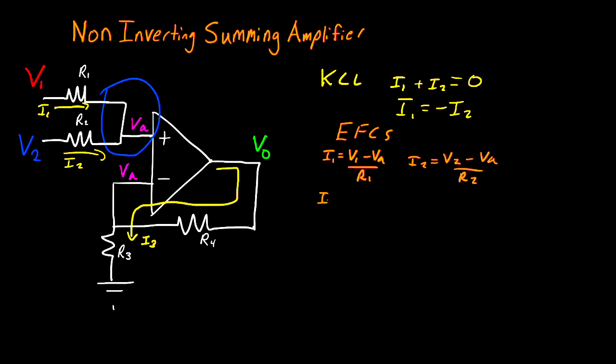Now for R3, we have I3 is equal to VA minus zero divided by R3. Lastly, we have to write the equation for R4, and that's going to be I3 is equal to V0 minus VA divided by R4. At this point, we have all the equations that describe the functionality of the circuit.